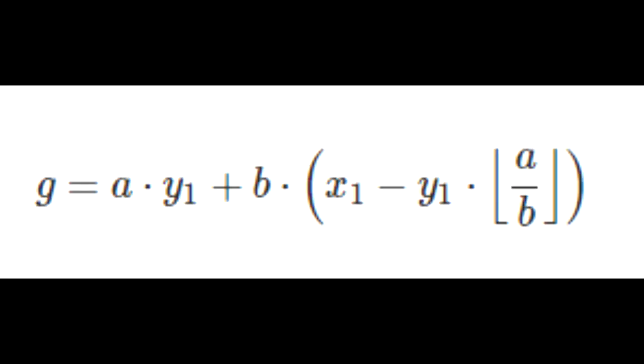Okay, so now if we were to FOIL and rearrange the terms, we get G is going to equal A times Y1 plus B times (X1 minus Y1 times floor of A divided by B).